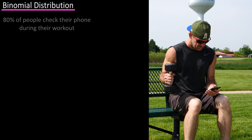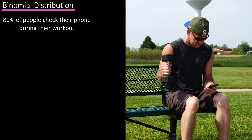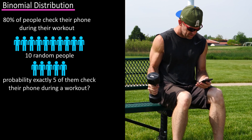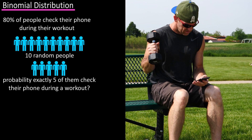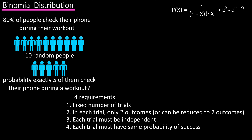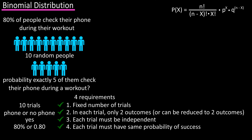As an example, let's say you took a poll and found that 80% of people checked their phone during their workout. If you select 10 people at random, what is the probability that exactly 5 of them checked their phone during their workout? First we need to check that this fits the requirements for the binomial experiment. There are a fixed number of trials, in this example 10. It does consist of just two outcomes: check their phone, or not checked their phone. Each of the 10 trials is independent of one another, and the probability of success is the same for each trial. In this case, checking their phone during a workout is a success, with a probability of 80% or 0.80.